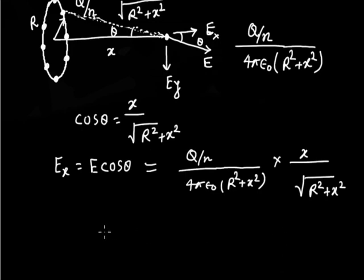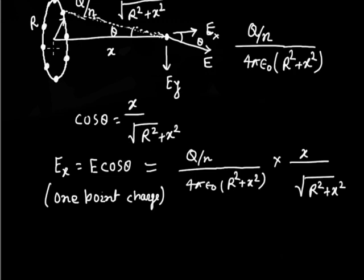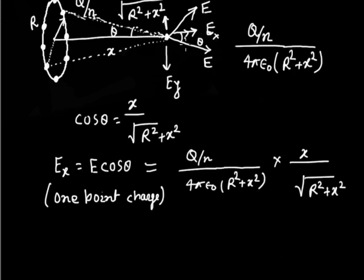Now we need to find the total electric field due to all n point charges. For a symmetrically placed opposite charge, it also contributes an electric field. You will have two times Ex if you take two charges, three times for three charges. The perpendicular components form a cone and all cancel out. So electric field in the x-direction is simply multiplied by n.